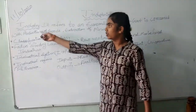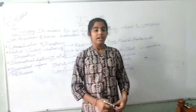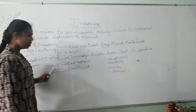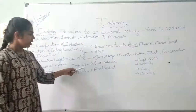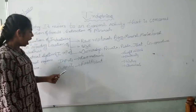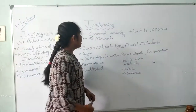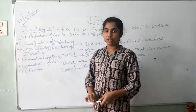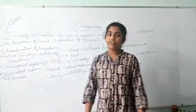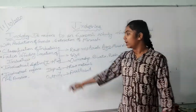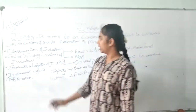Coming to the definition of industry: industry is an area where inputs are converted to outputs. You may have a doubt about what are inputs and what are outputs. Inputs are raw materials, outputs are the final product. Industrial activities is the conversion of inputs to outputs.